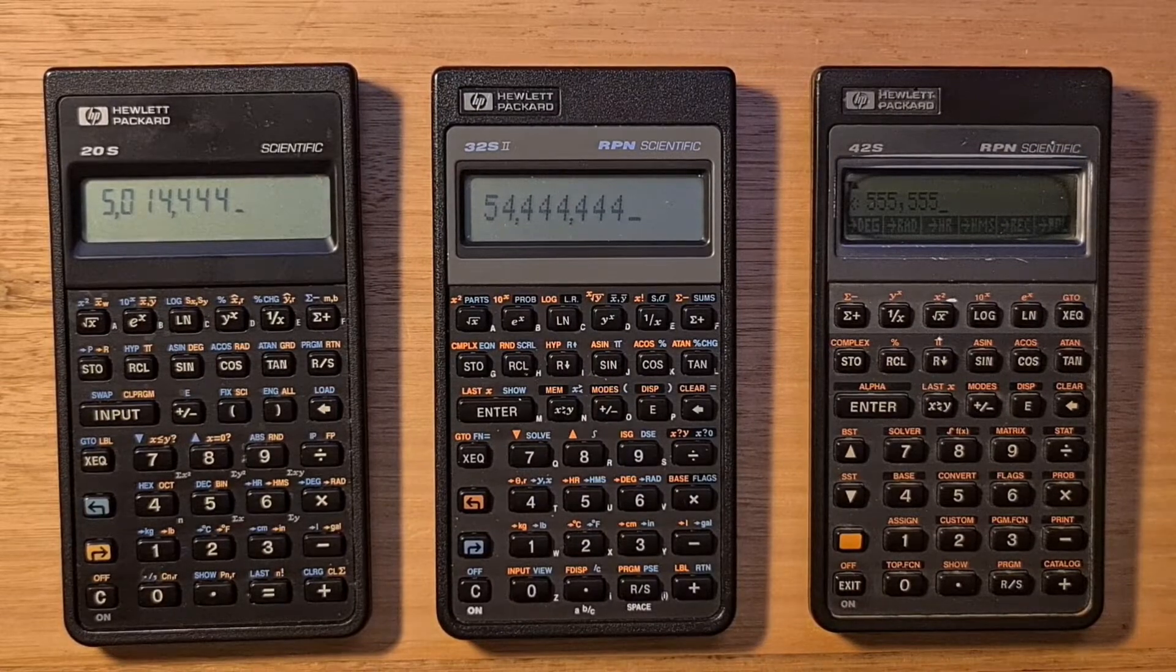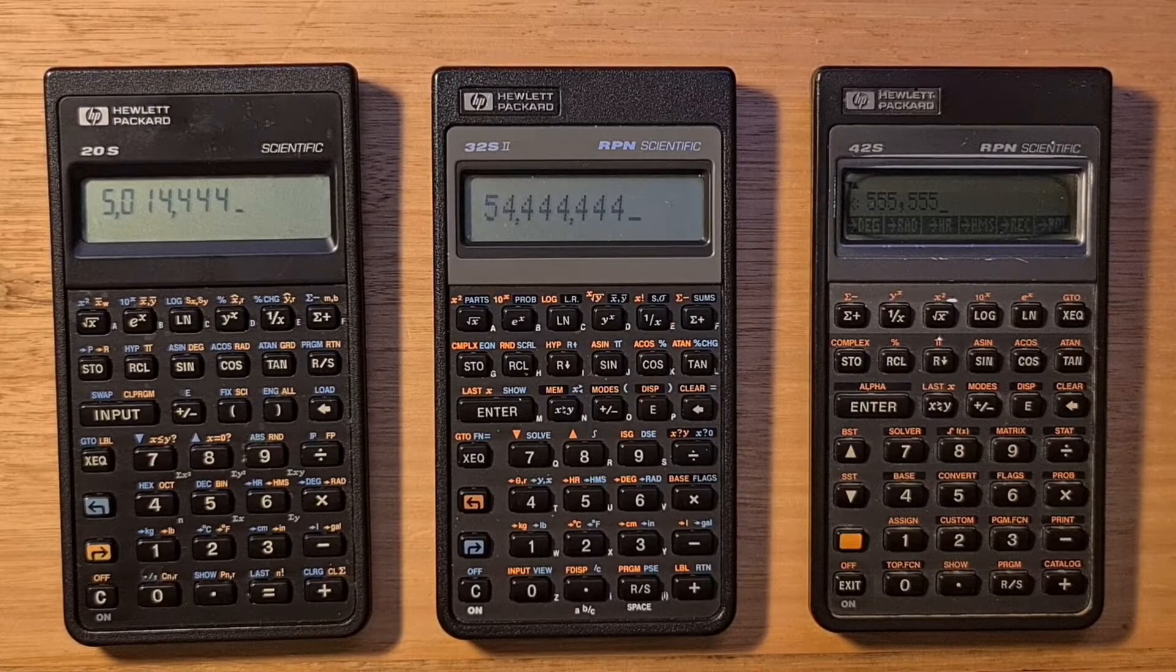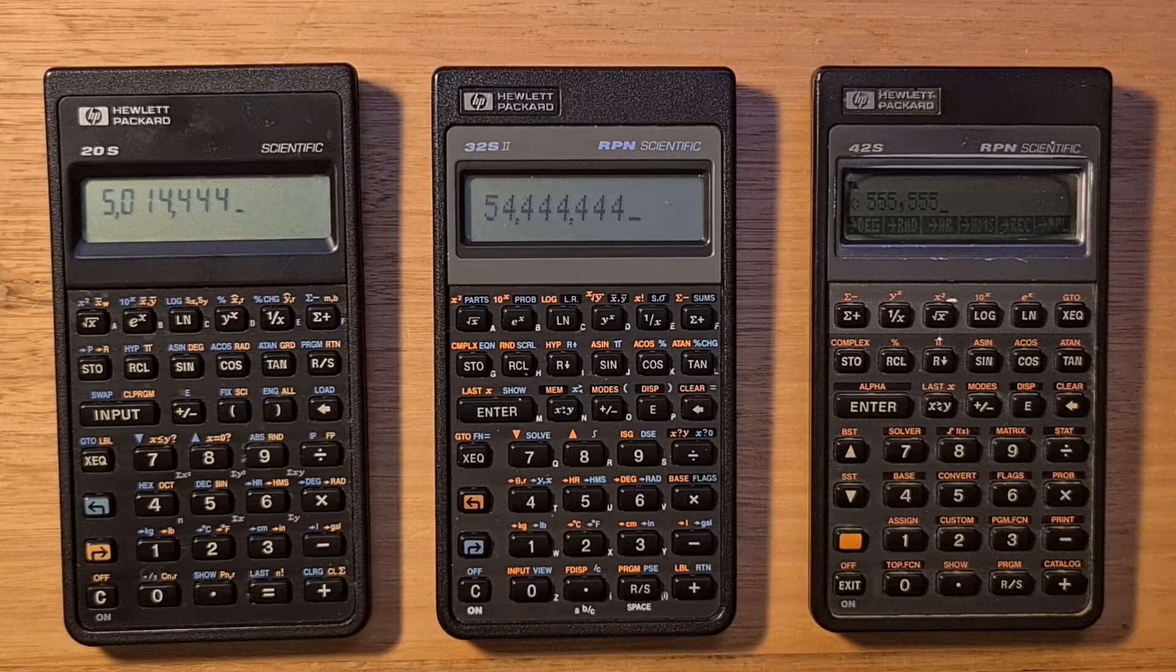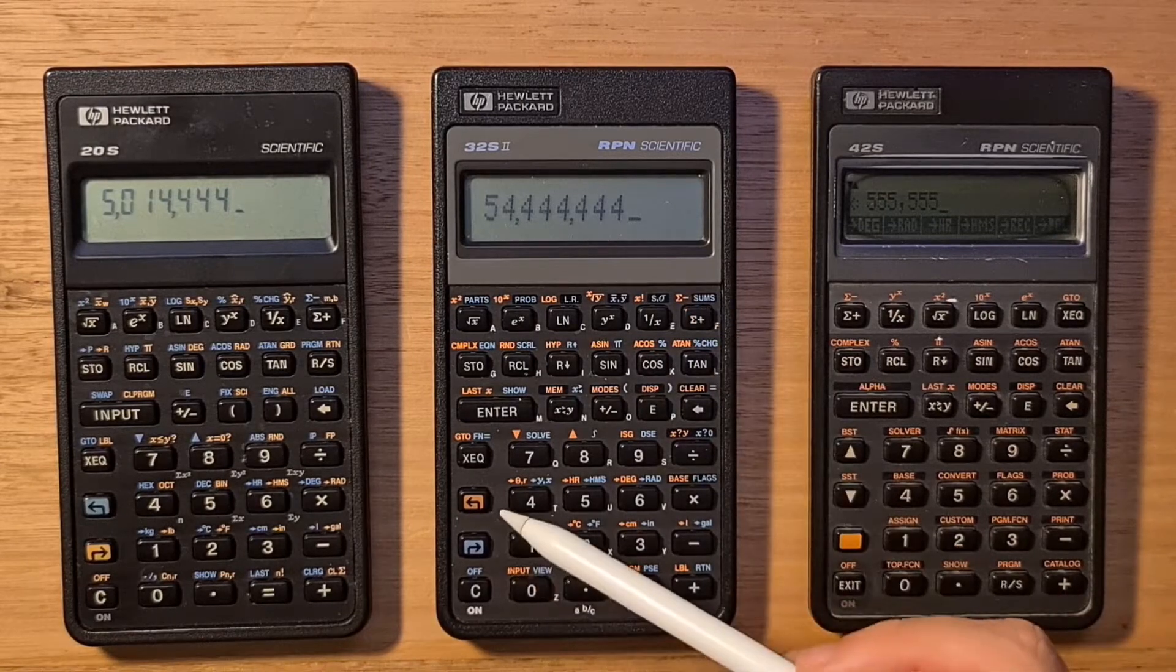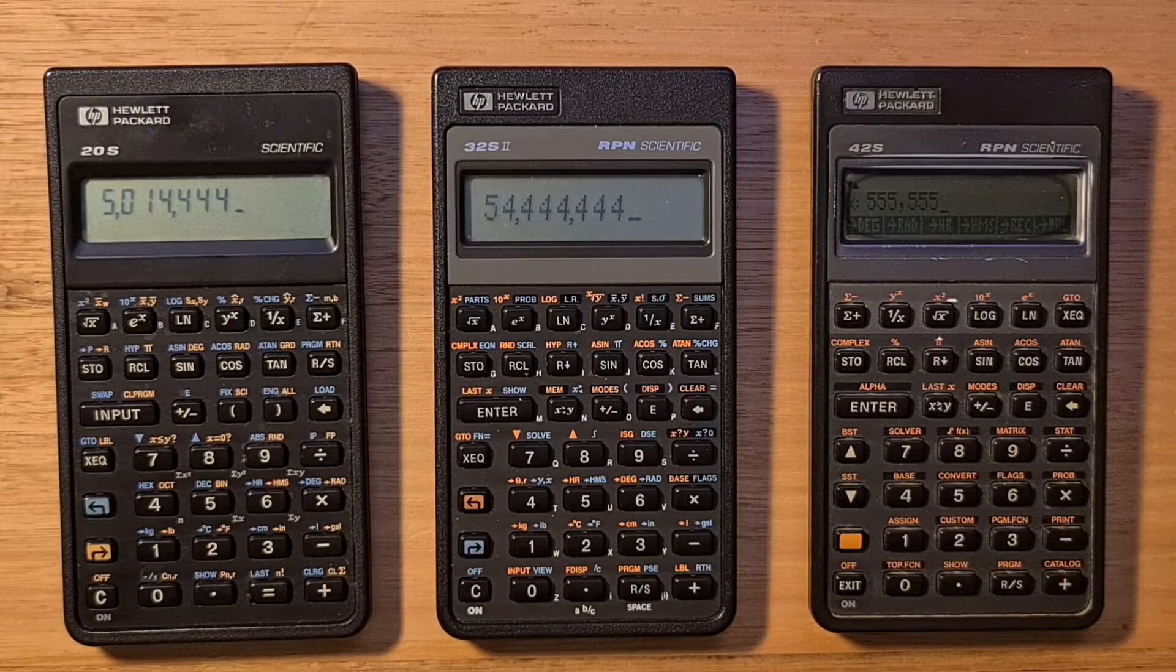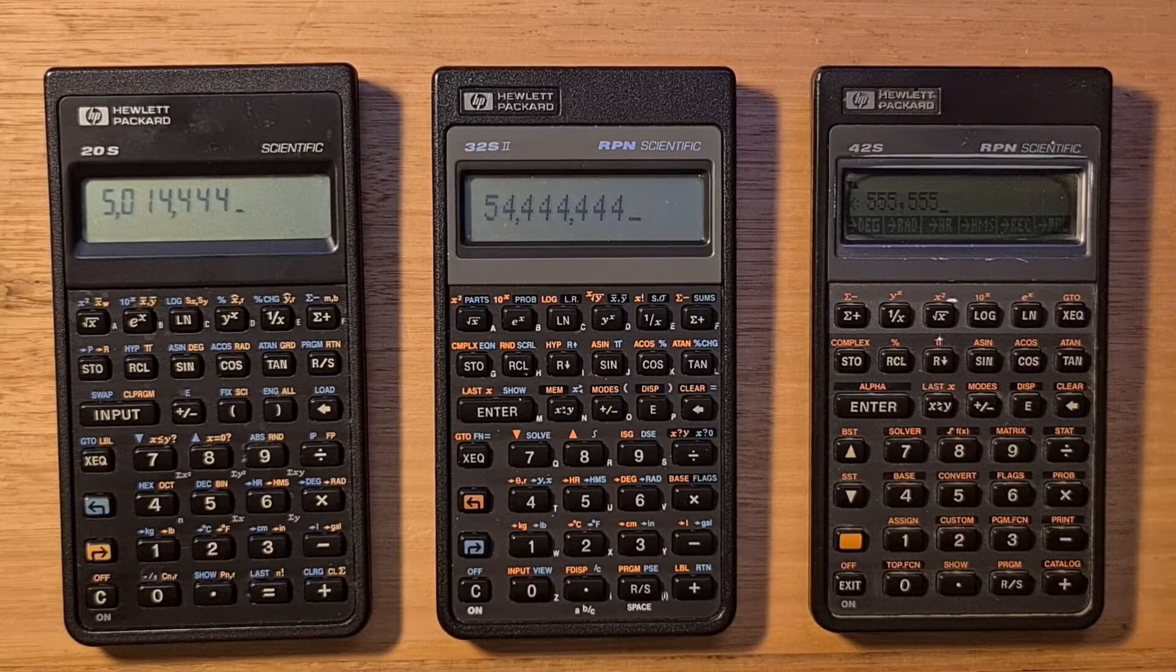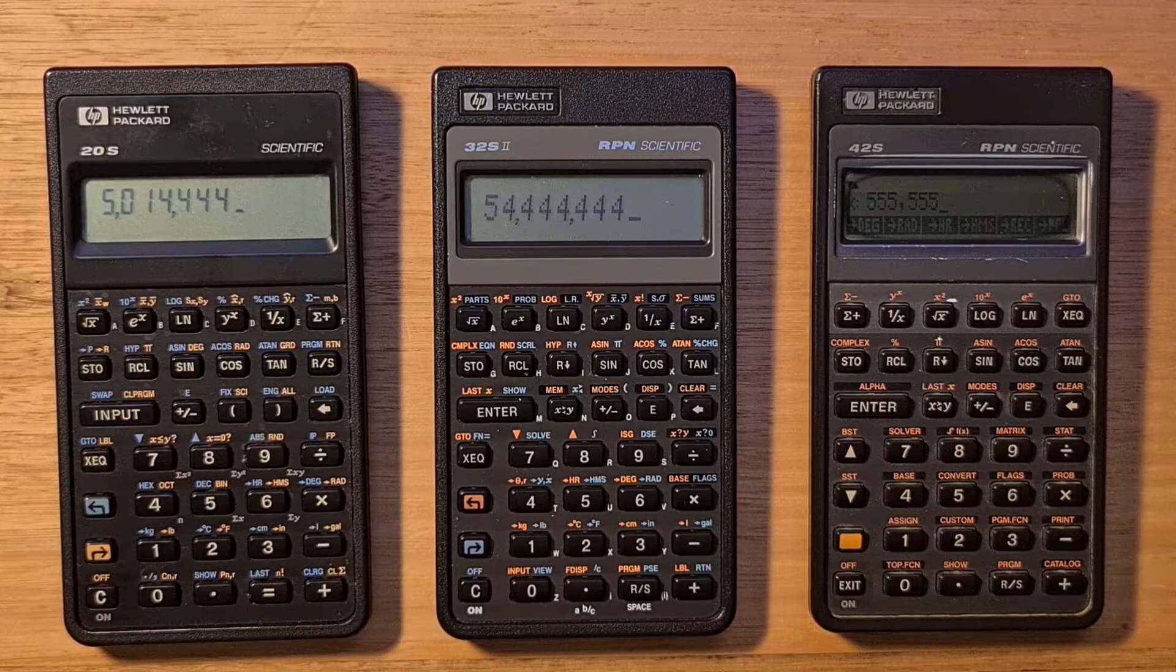There were two colour schemes for the 32S2. This was the earlier version with the dark screen bezel and the blue and orange shift keys. But in 1999, HP shifted to a green and purple combination and a silver coloured screen bezel that was to be more like the 33S.